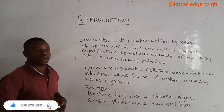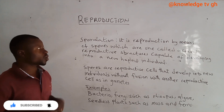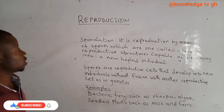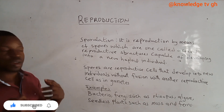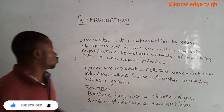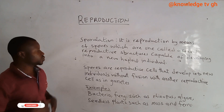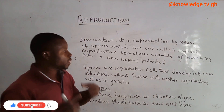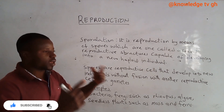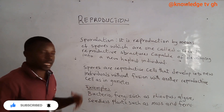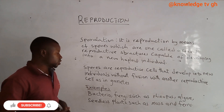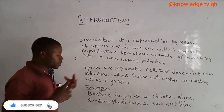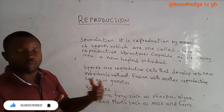Sporulation is another type of asexual reproduction. Sporulation is reproduction by means of spores, which are asexual reproductive structures capable of developing into new haploid individuals. Spores are reproductive cells that develop into new individuals without fusion with another reproductive cell. Examples of organisms that reproduce by sporulation include bacteria, fungi such as Rhizopus, algae, and seedless plants such as mosses and ferns.